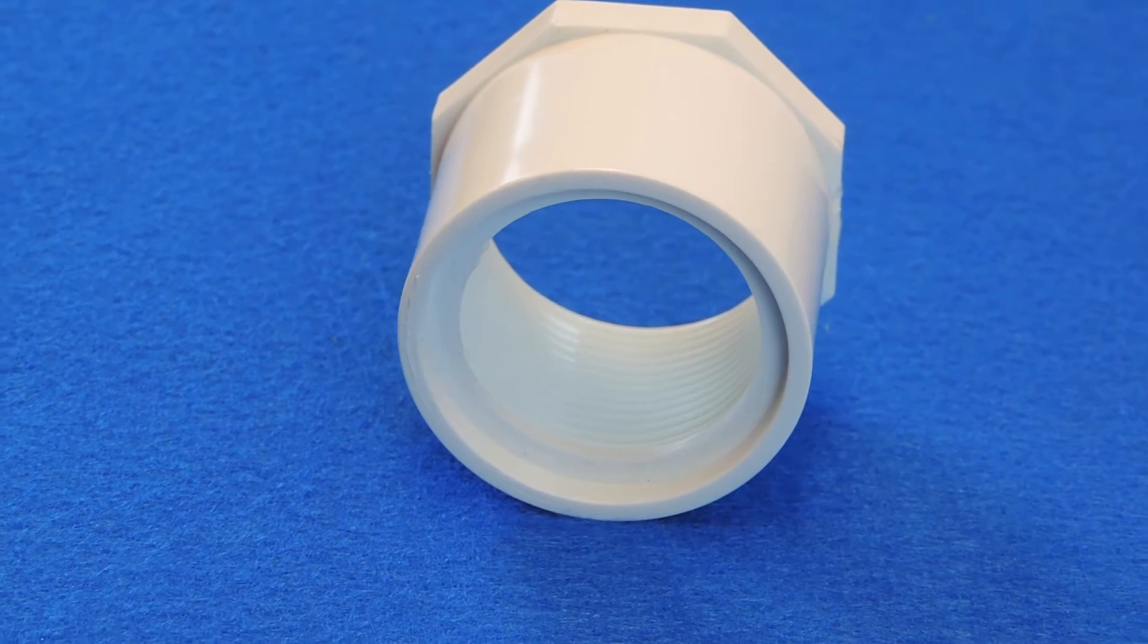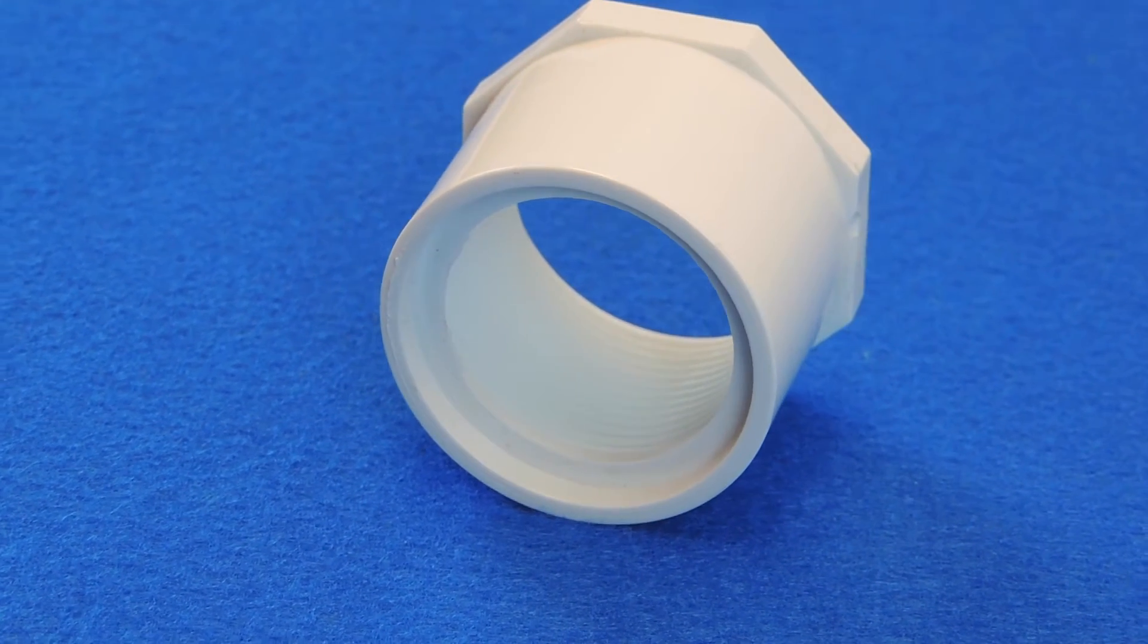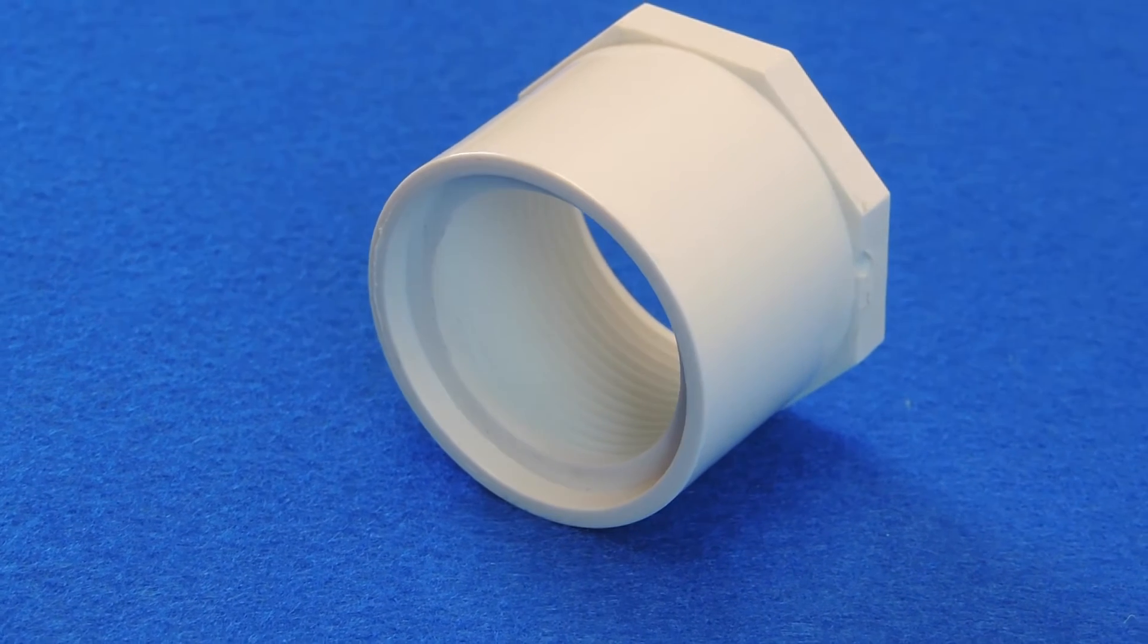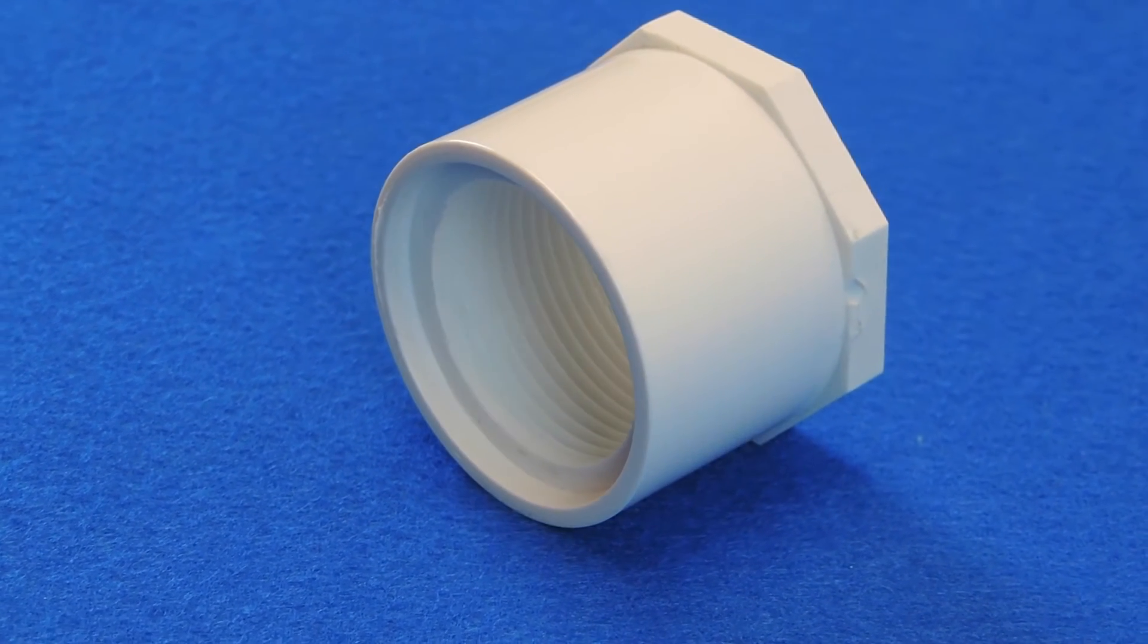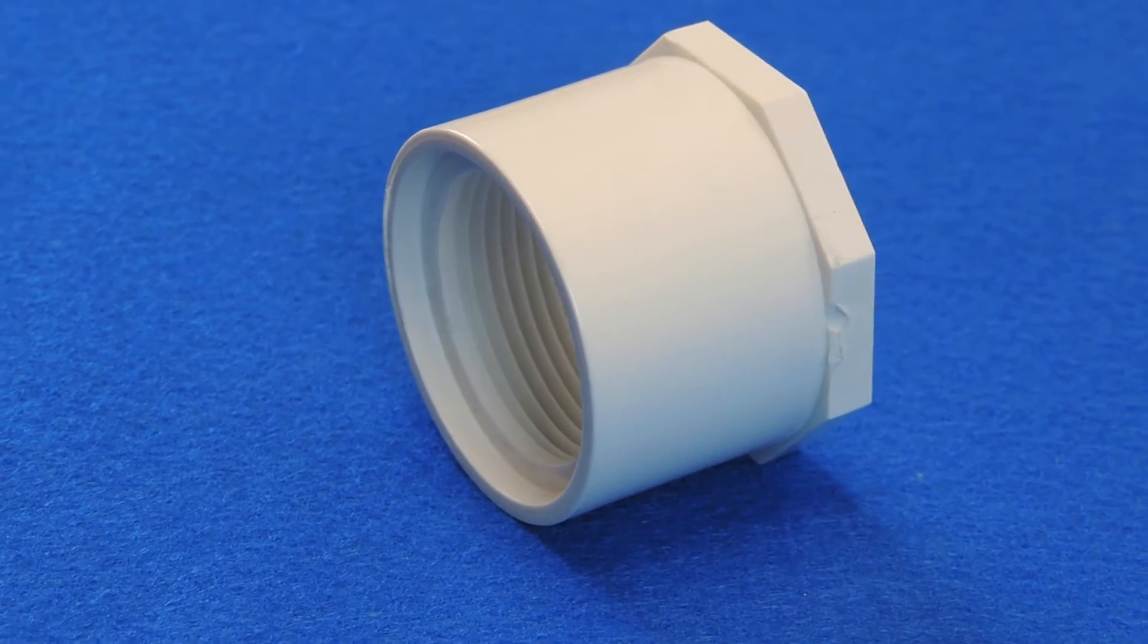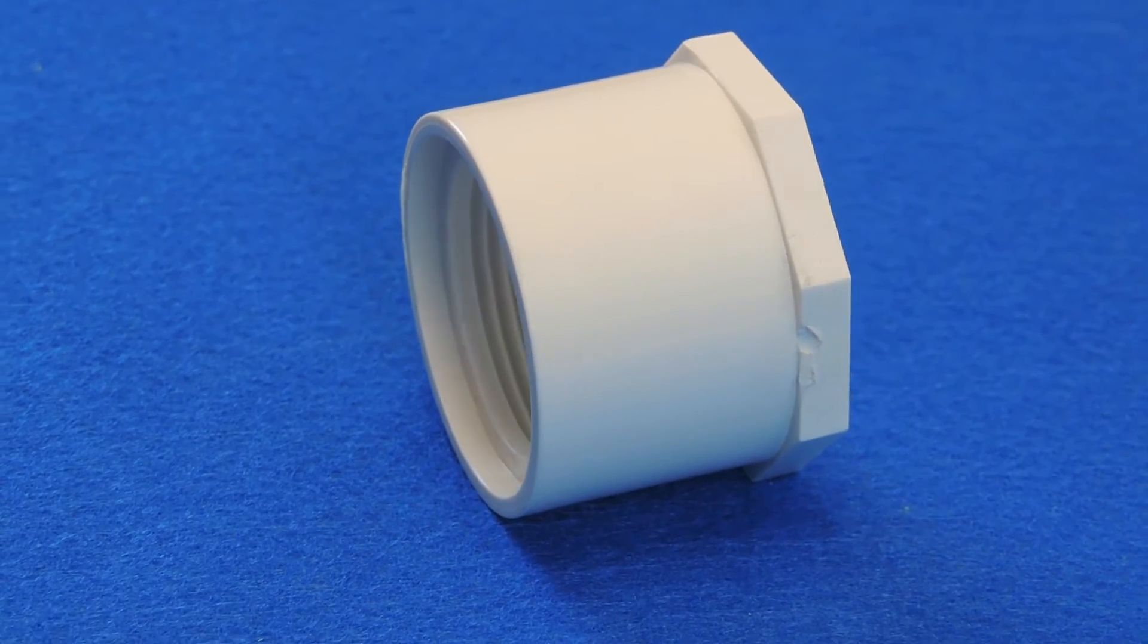Much like a spigot fitting, allowing the user to place the bushing into a larger fitting, thus reducing the diameter that the larger fitting requires. This fitting cements into a larger fitting and then allows a smaller male threaded pipe to be inserted into it.